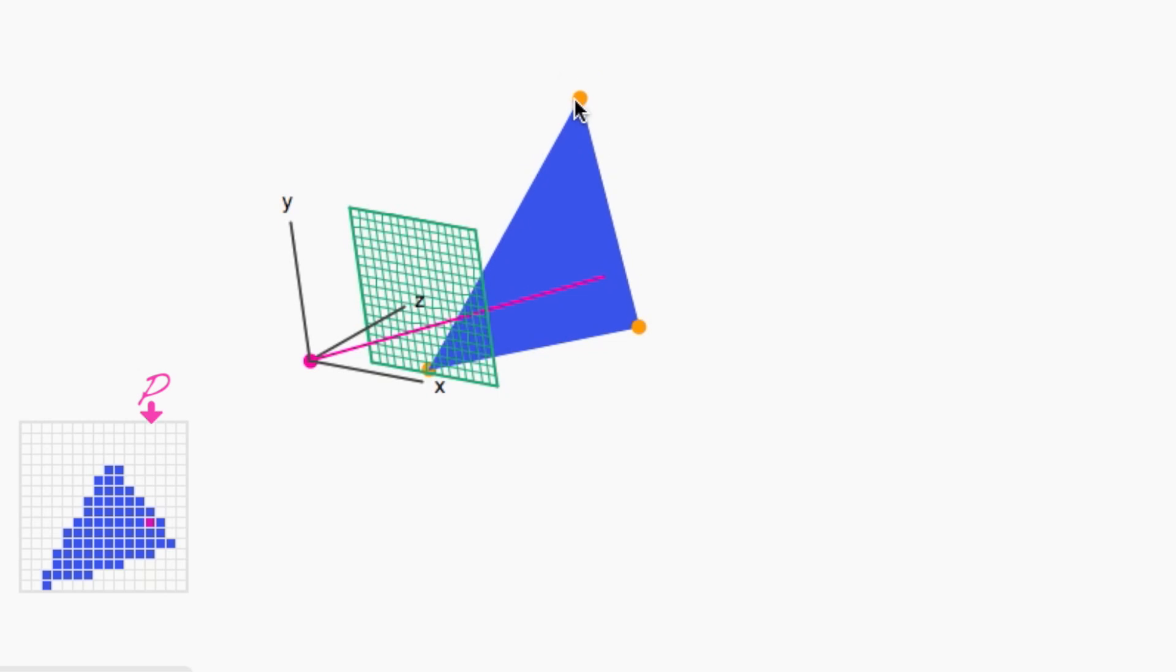Let's pick a pixel P on the image plane and construct the parametric representation of the ray CP as R(t) = (1-t)C + tP.